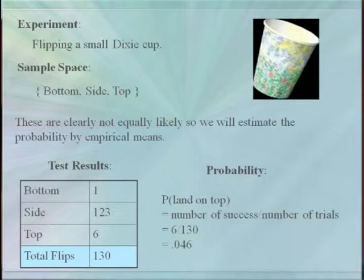Example time. First, consider throwing a small paper cup in the air. The sample space for how it could land would be the small bottom, the side, and the large top. However, these are not equally likely, so we couldn't use our original definition. So instead, we use our new definition and just keep repeating the experiment. In this case, after 130 flips, it landed once on the bottom, 123 times on the side, and six times on the top. So our estimate for the probability of the cup lands on the top would be six out of 130. If we wanted to improve this estimate, we only need to perform more experiments.